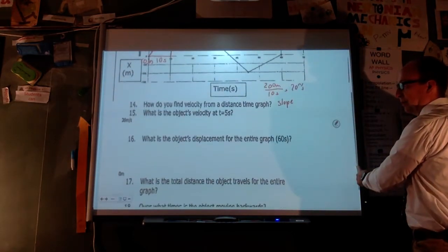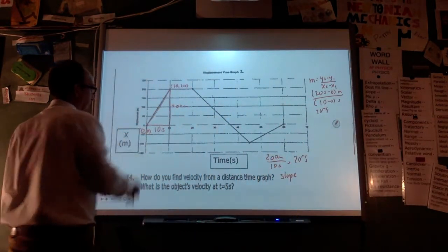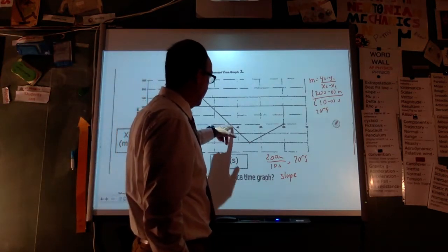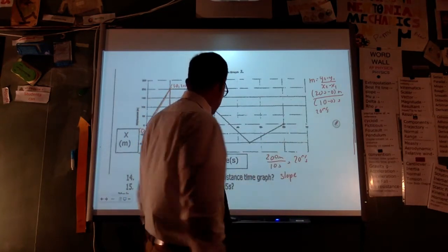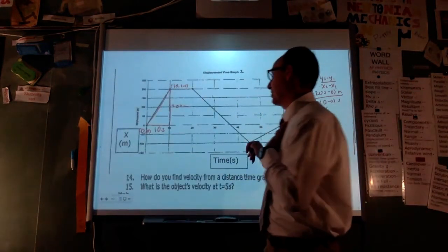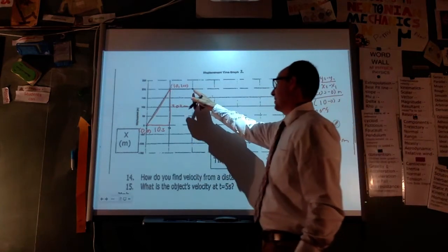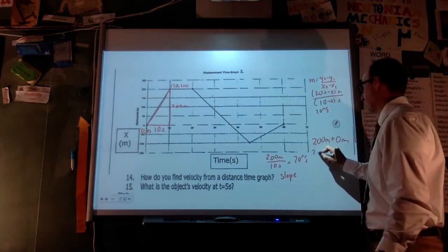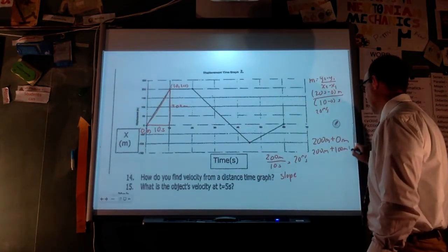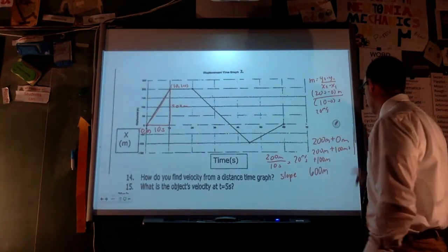What is the displacement and distance for the entire graph? It starts at 0, goes out, rests, returns to 0, goes backwards, and comes back to 0. So the displacement is 0. For distance: it goes 200 meters out, rests (0), returns 200 meters, goes 100 meters backwards, then returns 100 meters — totaling 600 meters.